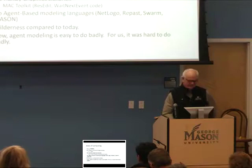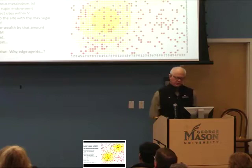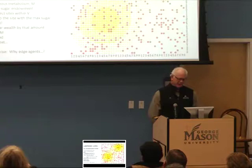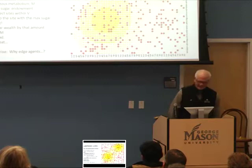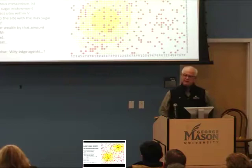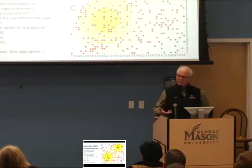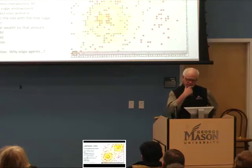I thought it would be fun to show the SugarScape model that everyone seems pretty familiar with. Many of the themes we got interested in have endured as questions for the field. This model is simply: the yellow stuff is a space of renewable resource sites, grown back to their capacity — the darker the yellow, the higher the capacity. Agents have local vision and a metabolism — that's how fast they burn sugar. Everybody gets a little sugar at the beginning. They inspect the sites within their vision, go to the site with the max sugar, eat it, accumulate sugar wealth by that amount, decrement it by their metabolism. If the result is negative, they die. Otherwise, they repeat.